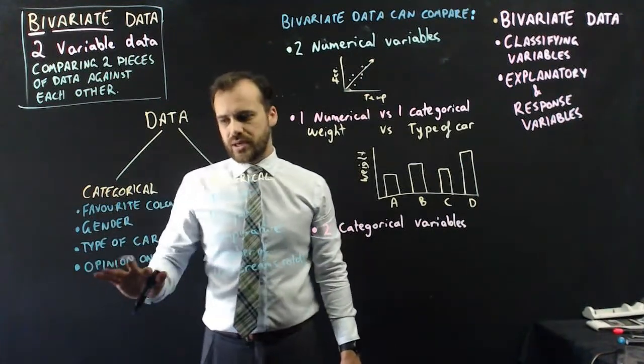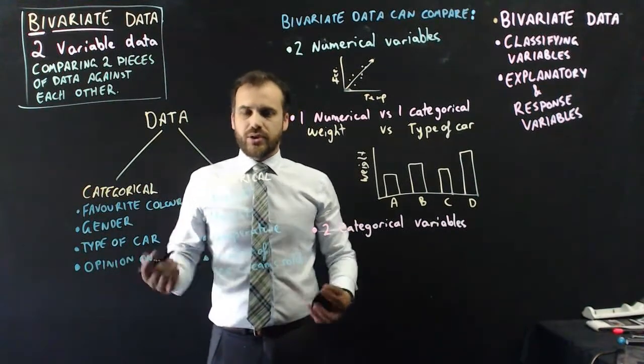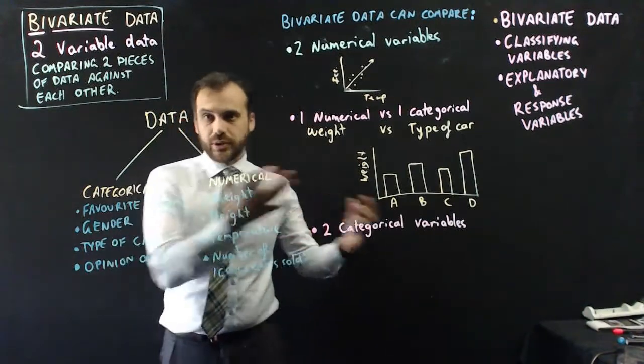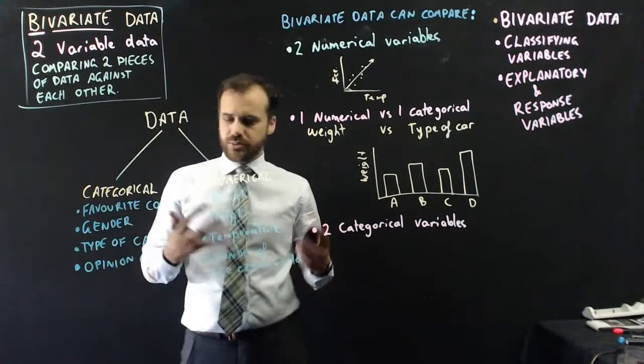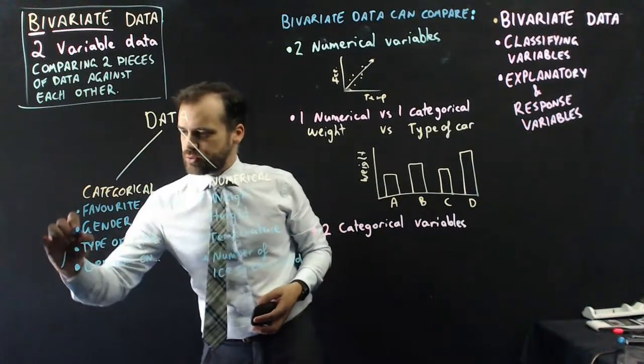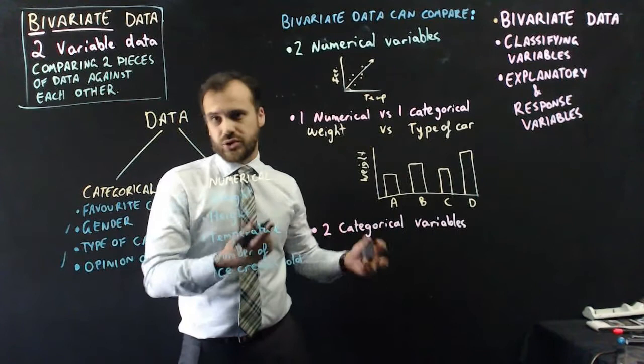Now comparing two categorical variables - well let's compare gender and maybe one more. I'm just going to add an important thing here: opinion on. So it might be your opinion on whether you love the Brisbane Broncos or you hate the Brisbane Broncos, or whether you love homework or hate homework, or do homework or don't do homework. Those might be our categorical variables.